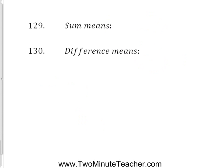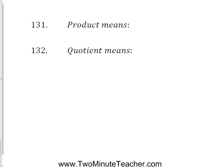What does sum mean? Sum means add — it's the answer to an addition problem. Difference means subtract — it's the answer to a subtraction problem. Product means multiply — the answer to a multiplication problem. Quotient means divide — the answer to a division problem.